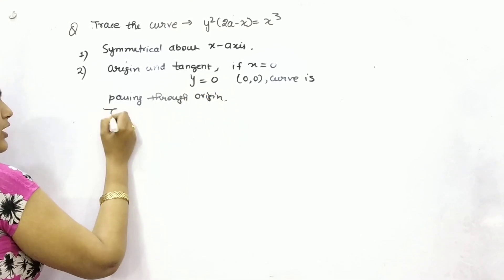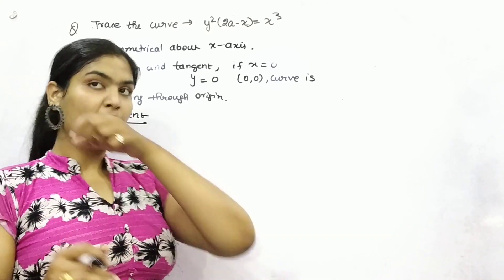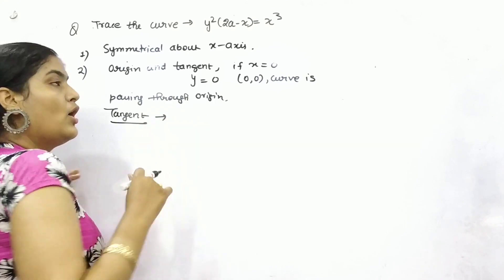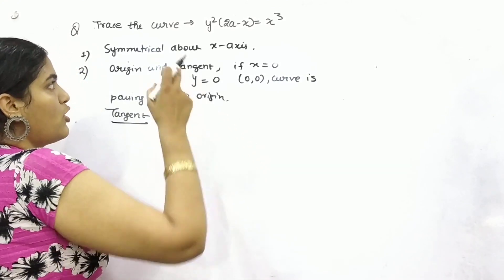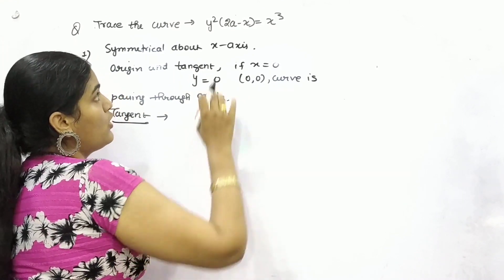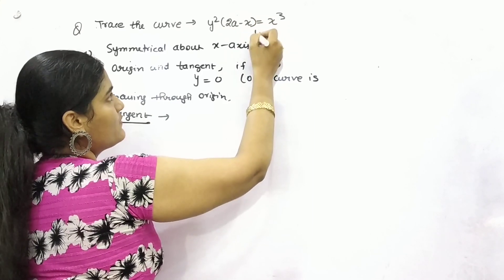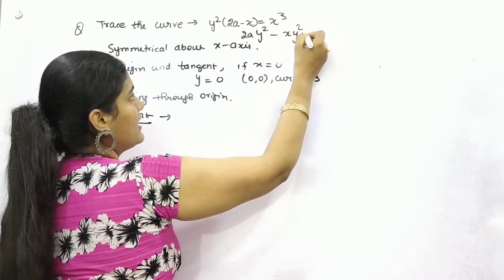Thereafter for tangent, you need to find out whether this is of cusp type or node type. And for that, what you need to do? Put lowest degree term as 0. So your lowest degree is, you can see that if you expand it: 2ay², xy², x³.